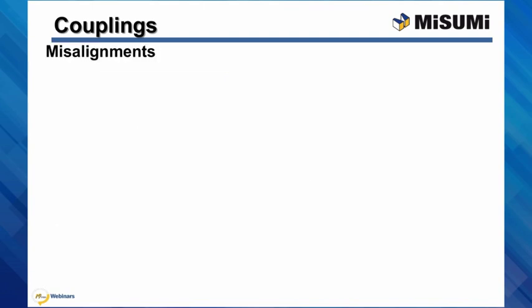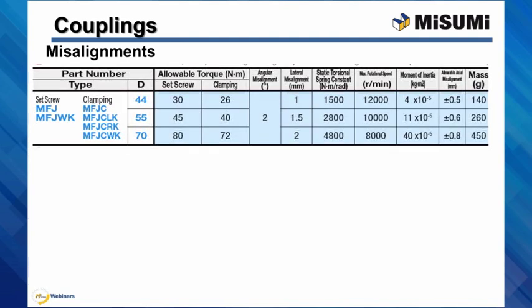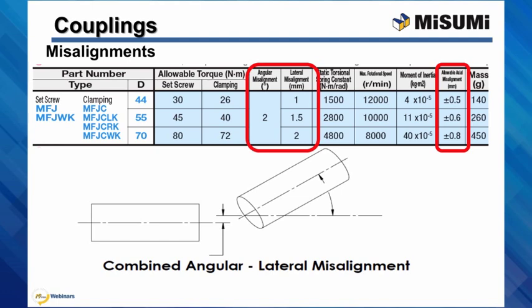For each coupling Misumi offers, you can find allowable misalignment values in the technical section of the couplings. All these values are empirical. One thing the user has to watch for is that misalignment values shown in the table are when each misalignment is occurring individually. If more than one misalignment is occurring simultaneously, then allowable values for lateral, angular, and axial misalignments will be reduced by 50% from the original values — a common oversight when selecting a coupling. Other important characteristics include torsional spring constant, maximum rotation speed, and moment of inertia.